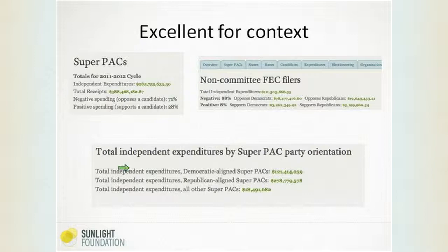There's also a page where we break down the total independent expenditures by party orientation — where they're spending. American Crossroads is much more aligned with the right. You can see that the Republican-aligned ones are spending much more than Democratic-aligned super PACs, which is something we've been hearing all along — but here's where you can get the numbers. And they're updated almost constantly, so you can get the latest number if you're working on a story on deadline.